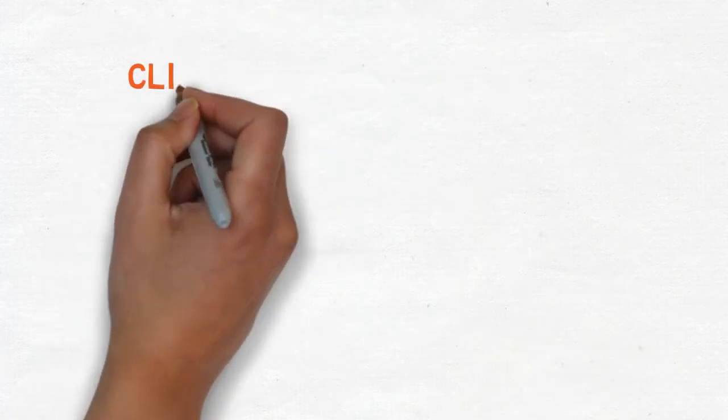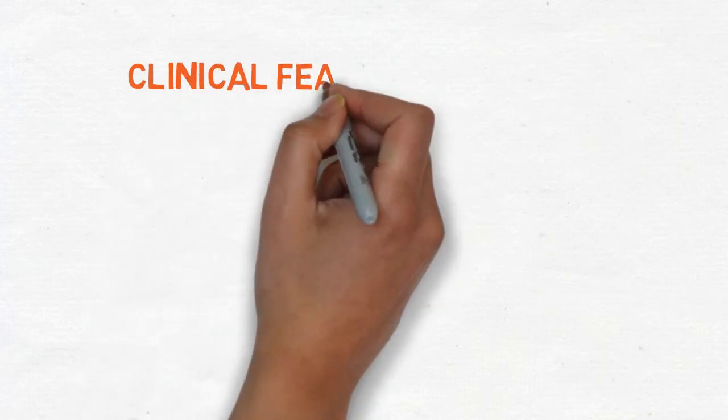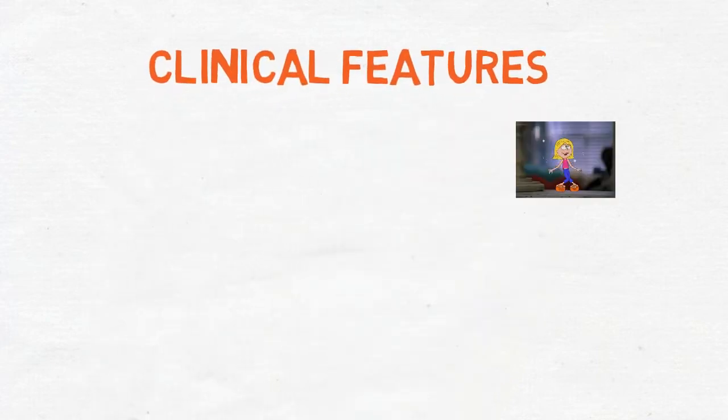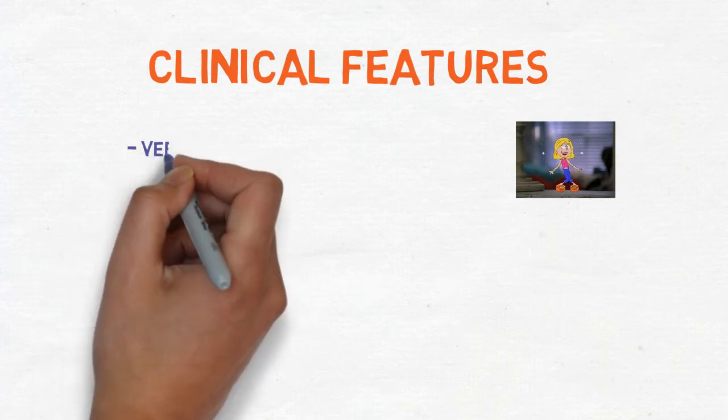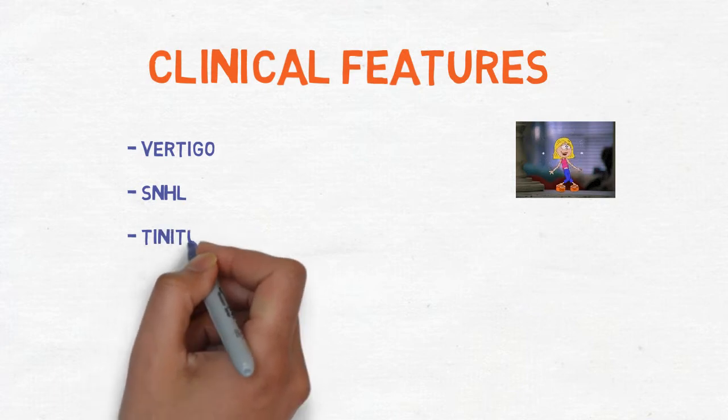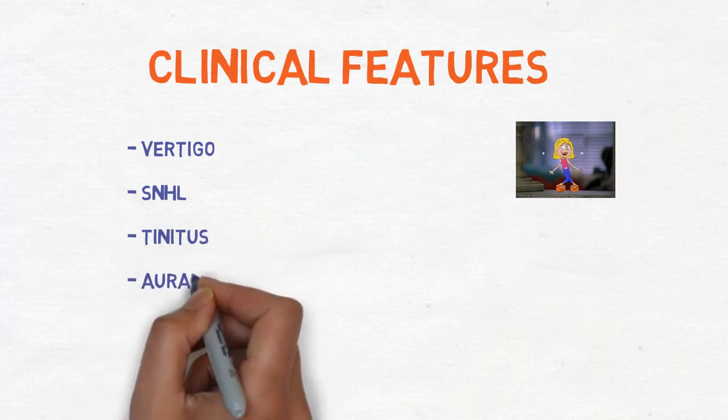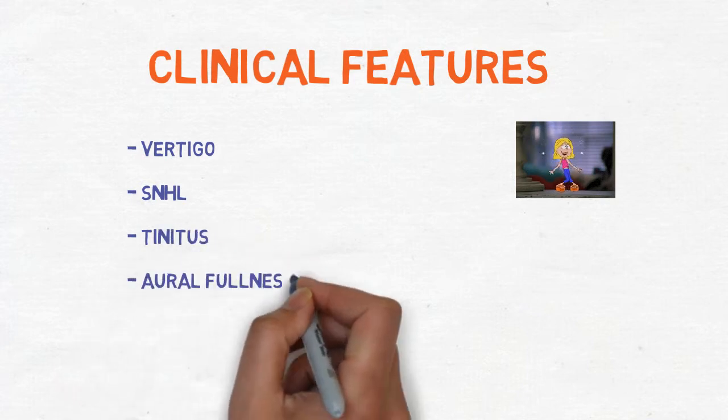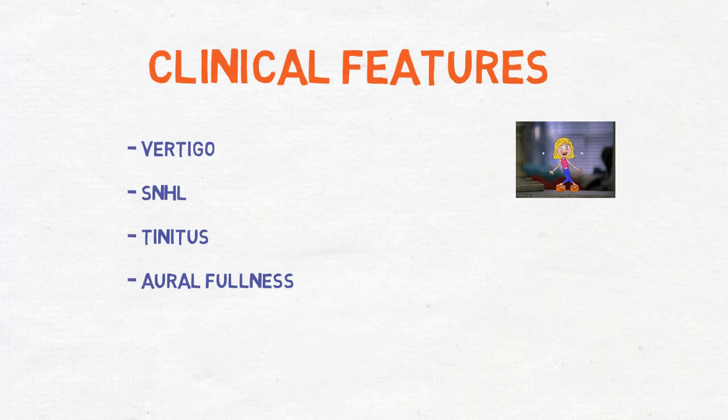Let's talk about the clinical features. The first one is vertigo because there is potassium injury into perilymph and this may cause irritation to the ear. Another one is sensory neural hearing loss due to ion gradient imbalance. Another is tinnitus and may cause aural fullness.